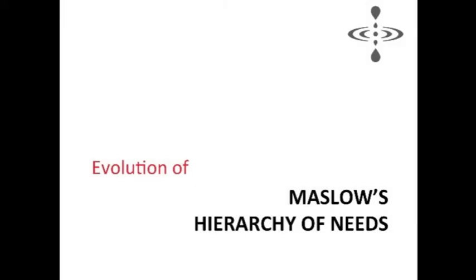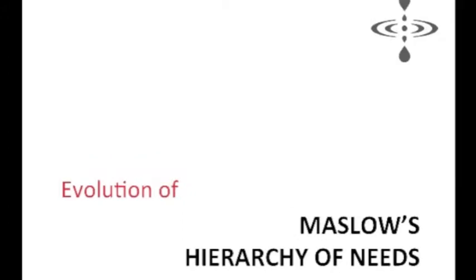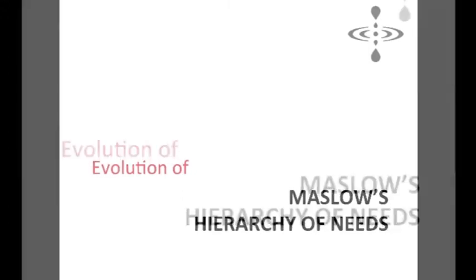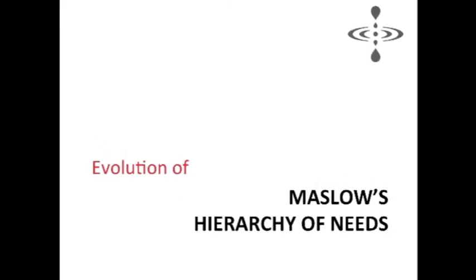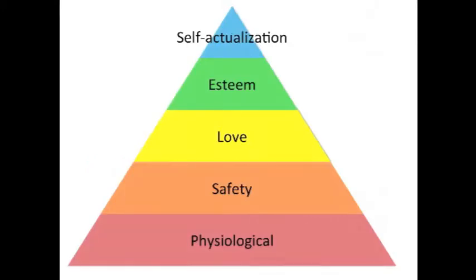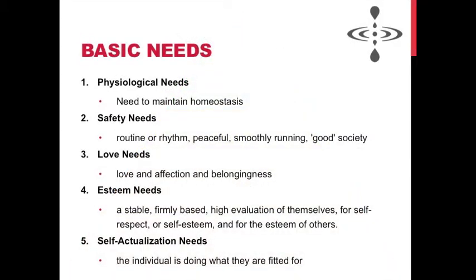I thought I might just introduce or reintroduce Maslow's hierarchy of needs and explain a little bit of the evolution that's happened to the model since he first introduced it in 1943. The first iteration of Maslow's model had five layers: at the bottom was physiological needs, followed by safety needs, love needs, esteem needs, and self-actualization.